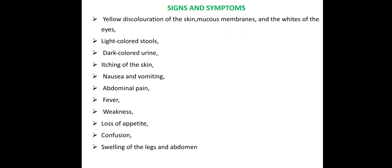Signs and symptoms: we have already discussed yellow coloration of the skin and mucous membranes. Other signs and symptoms include light-colored stools, dark-colored urine, and itching of the skin. These are the main signs and symptoms of jaundice.